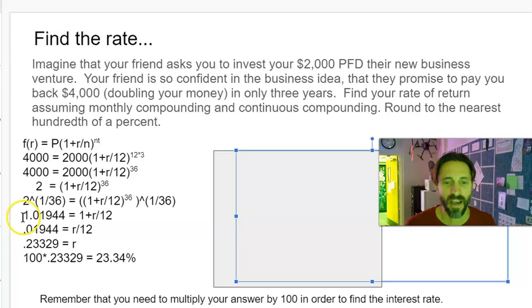Now that I have that value, that number equals 1 + R/12. I've eliminated the exponent on the right-hand side. Now I'm two steps away from solving this equation: I subtract 1 from both sides, then multiply both sides by 12.